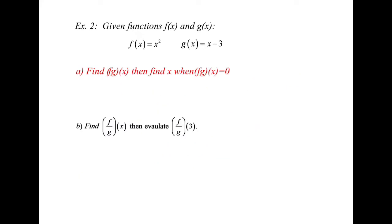On the next example, you're given f(x) and g(x) again, but on this one we'll be finding the product and the quotient. f(x) is equal to x squared, g(x) is equal to x minus 3. So we're going to first do the product. We're going to take f(x), which is x squared, and multiply by g(x), which is x minus 3. We can distribute, and that will give us x cubed minus 3x squared. So that's f times g of x.